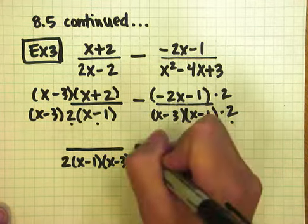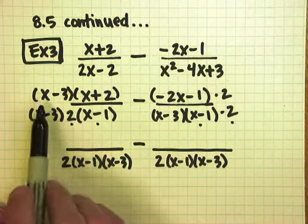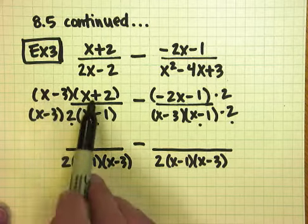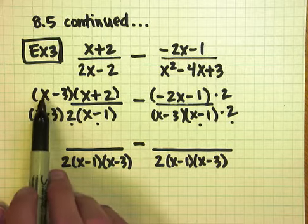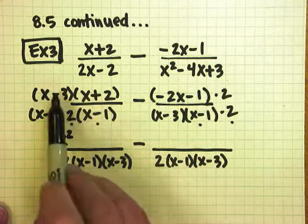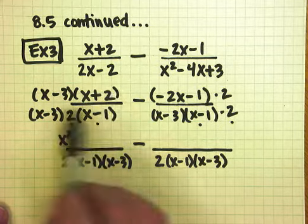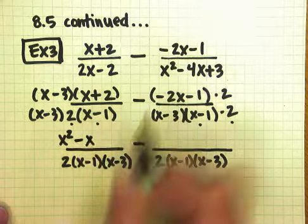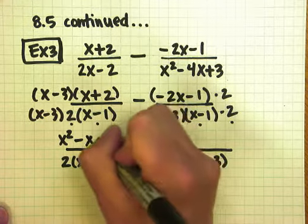Now I have a common denominator, so I need to simplify the tops. Up here, since I have two binomials multiplied to each other, I'm going to have to FOIL. So x times x is x squared. I get a minus 3x and a plus 2x. Minus 3 and plus 2, well, that's a minus x. Minus 3 times 2 is a minus 6.